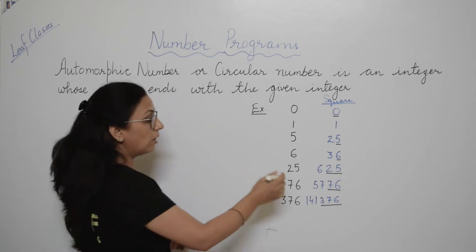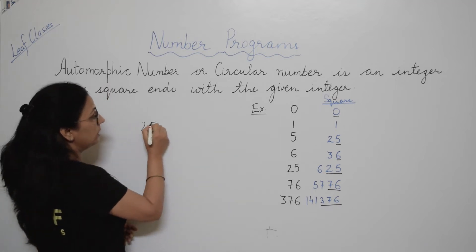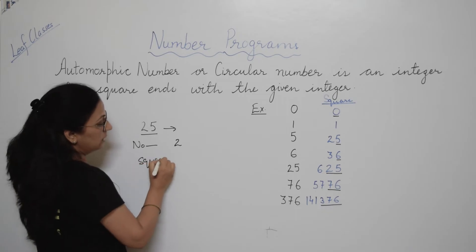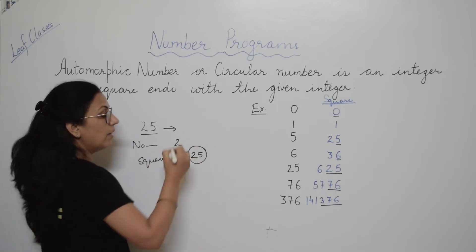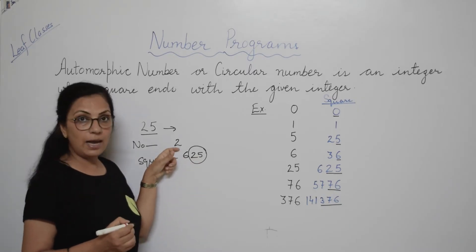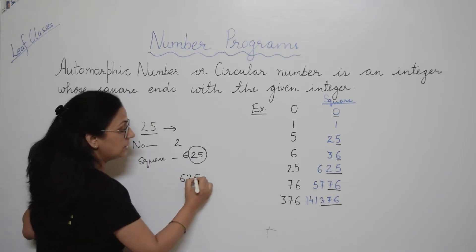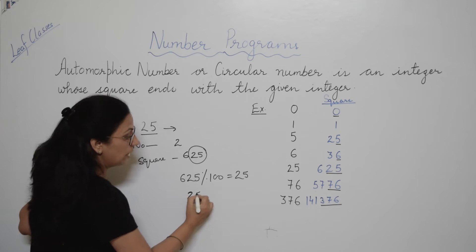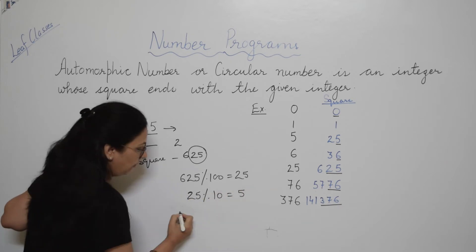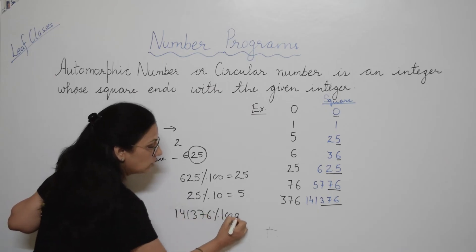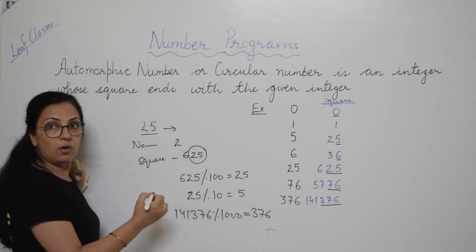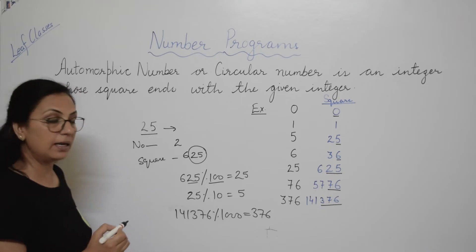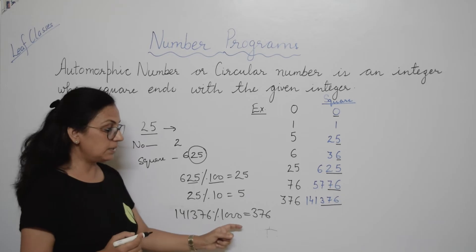Suppose we take the example of 25. We find the number of digits — that is 2. Then find the square value, which is 625. Now extract the last 2 digits because 25 is a 2-digit number. So 625 modulus 100 gives you 25. For a single digit like 5, square is 25, and 25 modulus 10 gives 5. For 141376, modulus 1000 gives 376. So to extract the last 2 digits, use modulus 100; last 1 digit, modulus 10; last 3 digits, modulus 1000.